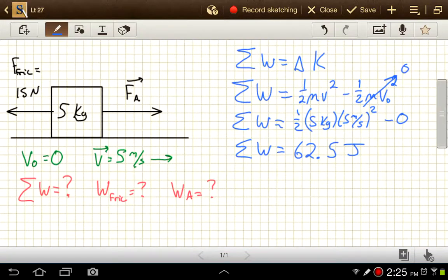We know that that total work is done by these two forces, the 15 newtons to the left and the applied force to the right. We can figure out how much work each one of these forces did, and add those two together, and that should give us a number of 62.5 joules.